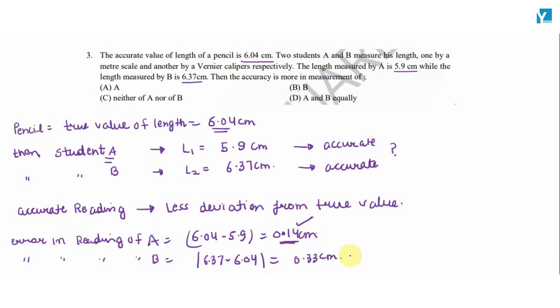Student B's reading is farther from the true value. Student A's reading is more close to true value. So reading of A is accurate.